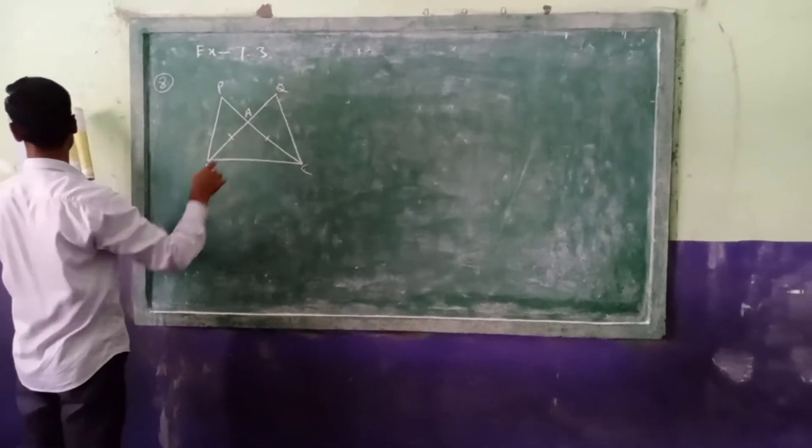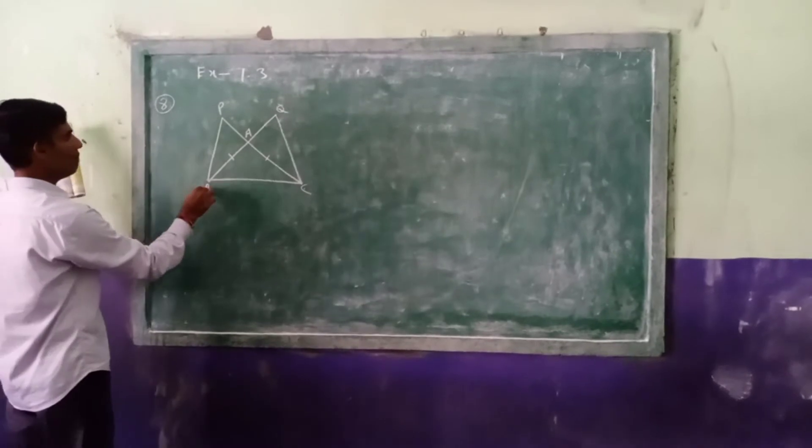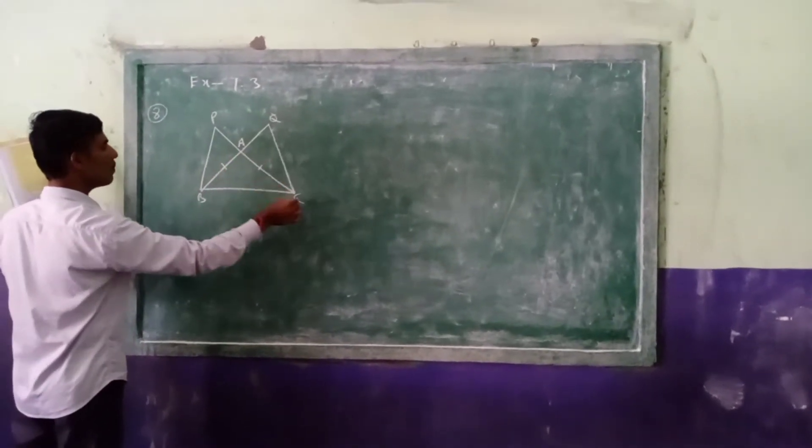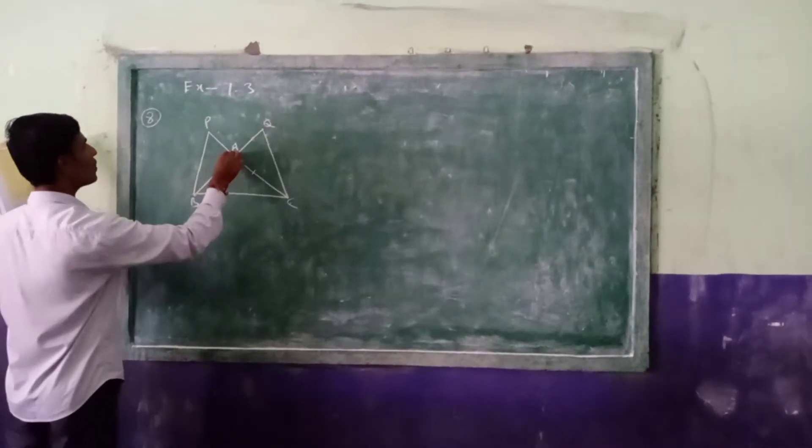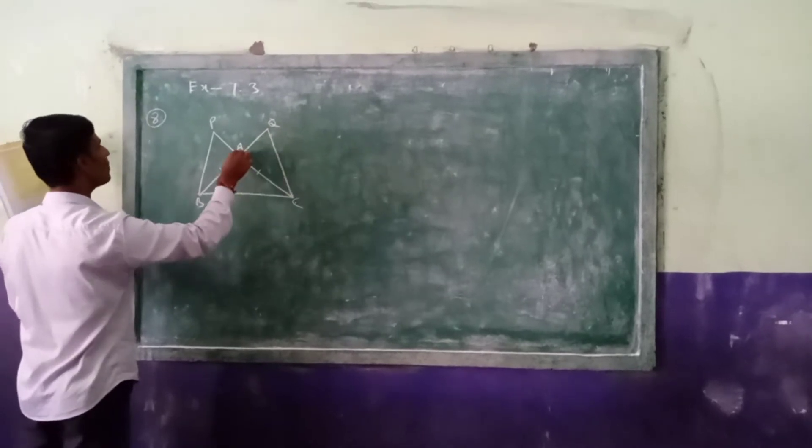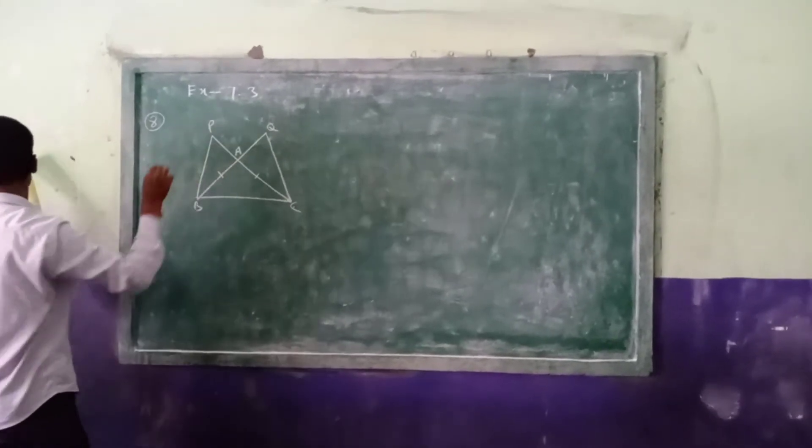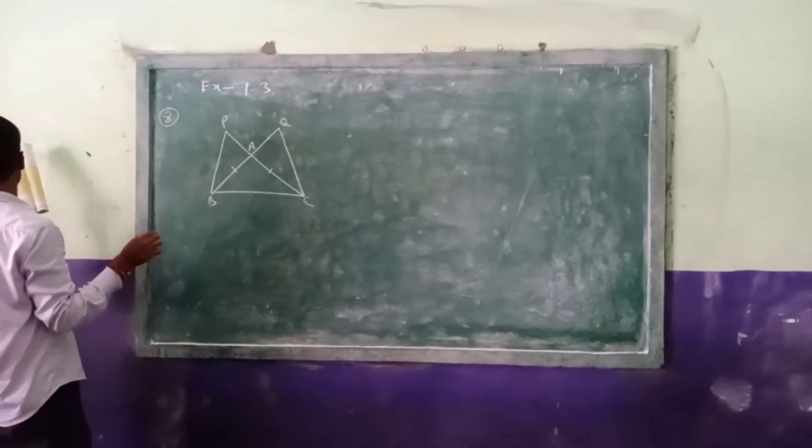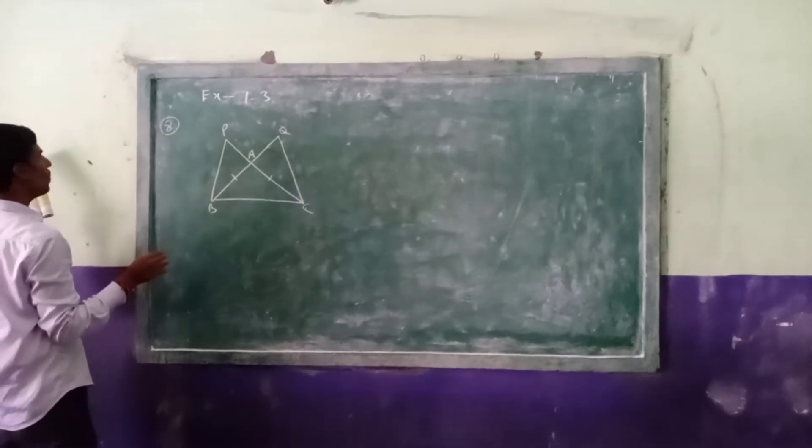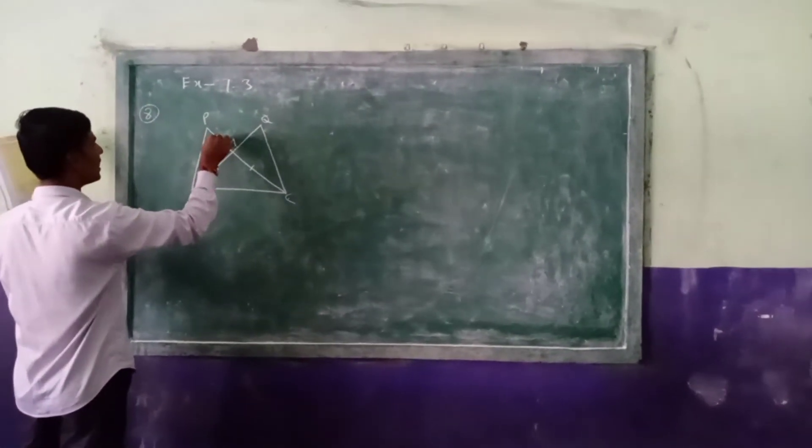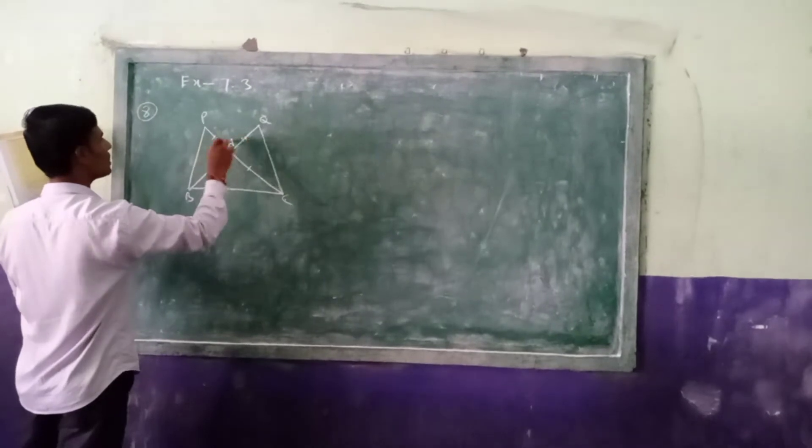These two are equal. BA and CA produce to Q and P. BA produce to Q and CA produce to P, such that AQ equal to AB. These two also equal.